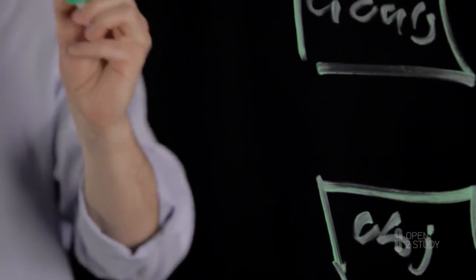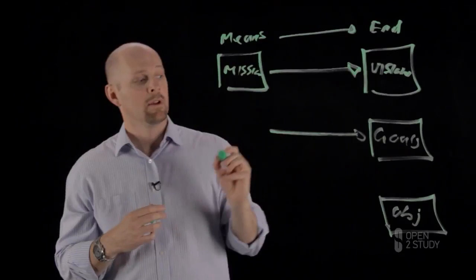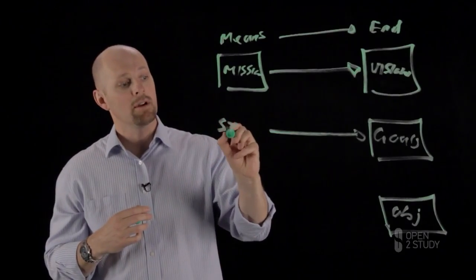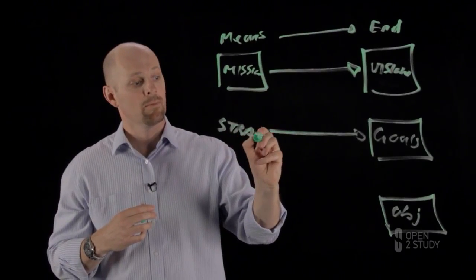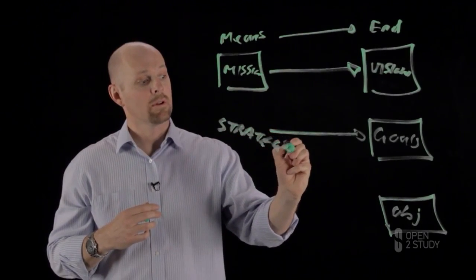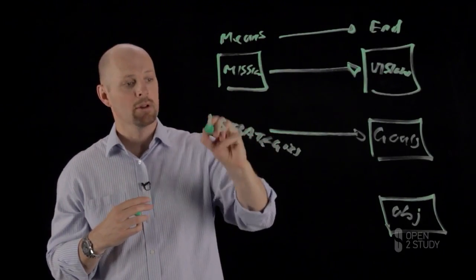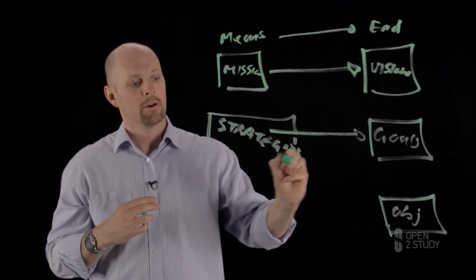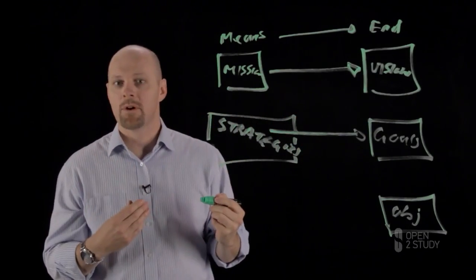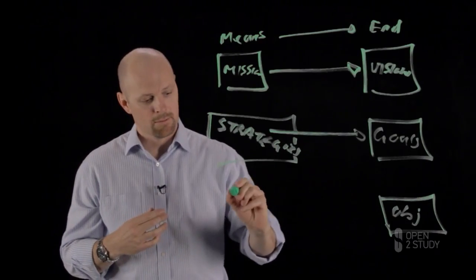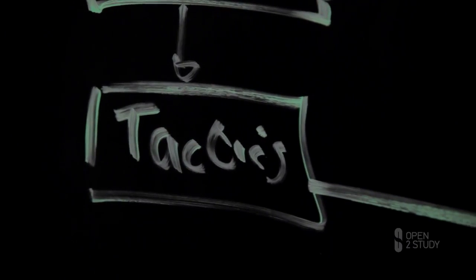Well, how do I achieve my goals? Same story: in order to achieve my goals, I have a series of strategies, plural, and those are the building blocks of how I achieve my goals. Then that decomposes even further—how do I achieve my objectives? You achieve your objectives through a series of tactics.